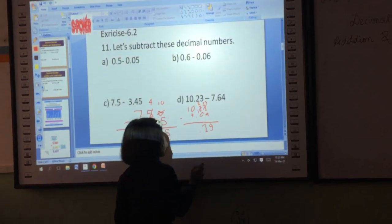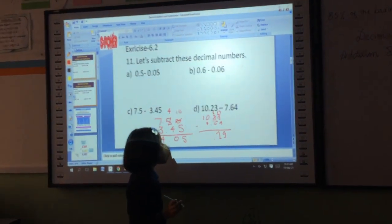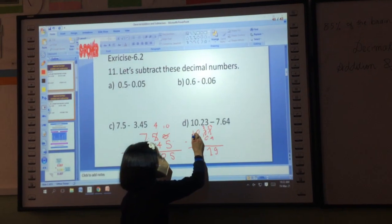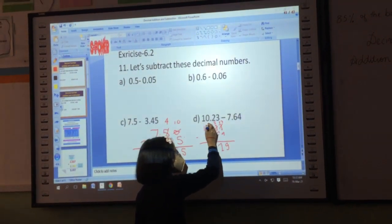Okay. Now, 0 minus 7. Can you? No. Again, what do you do here? Borrow. Okay. Borrowing one.